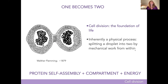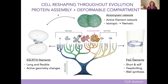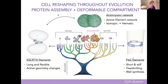You might think that across evolution, with so many different forms of life, there might be a million different ways to make two out of one. But actually there are only three main ways, and it's nicely split according to the tree of life.